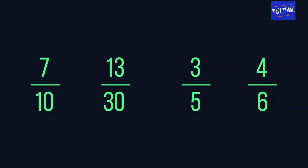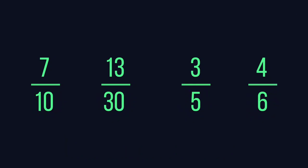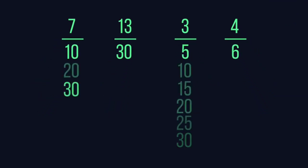However, because they all have different denominators, we cannot currently compare them. We could convert them all to decimals, but dividing by large denominators can be tricky without a calculator. What we can do is look for a common denominator, a number that is a multiple of all four denominators.